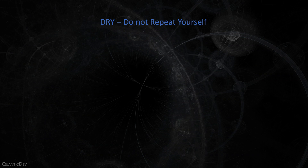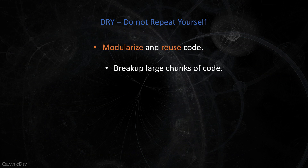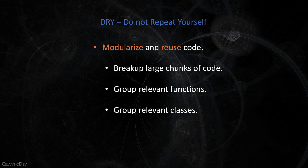4. DRY — Do Not Repeat Yourself. Reuse as much code as possible. To do this, you need to modularize your code. Break large chunks of code into smaller and reusable functions. Group relevant functions into classes and files. Group relevant classes in namespaces. Publish all this relevant code in the form of libraries, internal or open source.